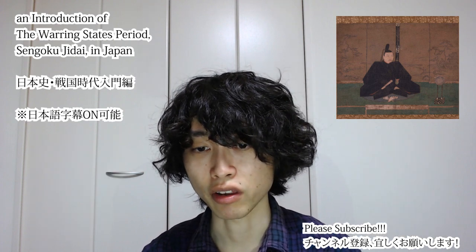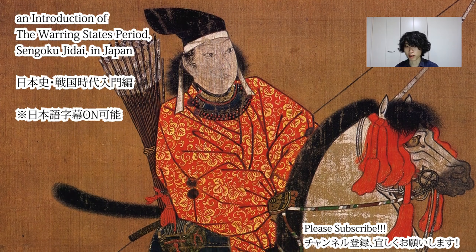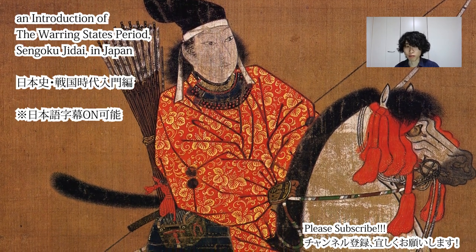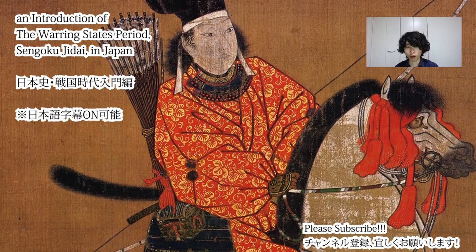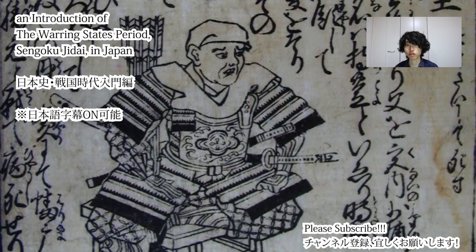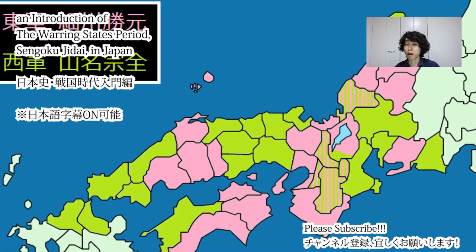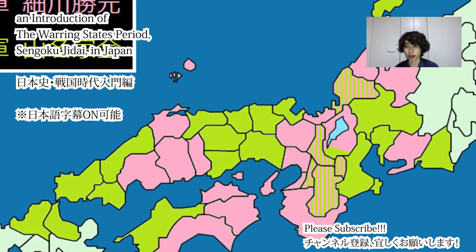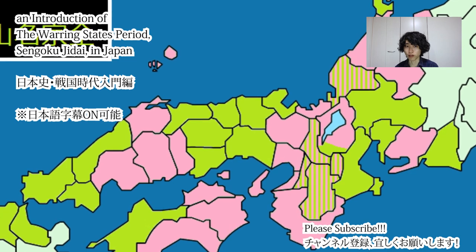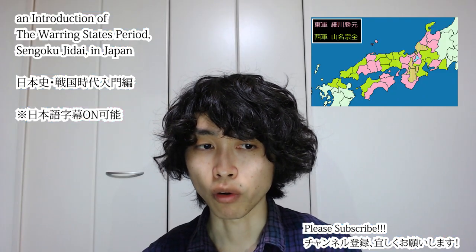Ironically, after the succession was promised, Yoshimasa and Tomiko had a son, Yoshihisa. Tomiko strongly wanted her son to become the ninth shogun and tried to make Yoshimasa withdraw the succession from his brother Yoshimi. Tomiko also asked another powerful vassal, Yamana Sozen, to support her son's claim. This dispute between Hosokawa Katsumoto and Yamana Sozen drew in the Muromachi shogunate and provincial military governors from across Japan, developing into a massive battle that divided Japan into two sides.